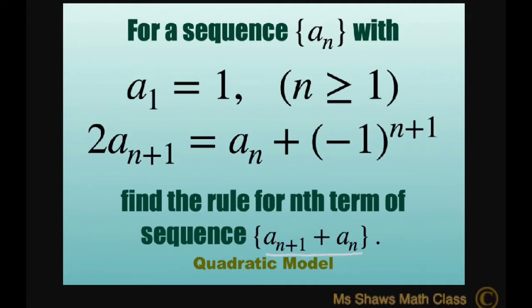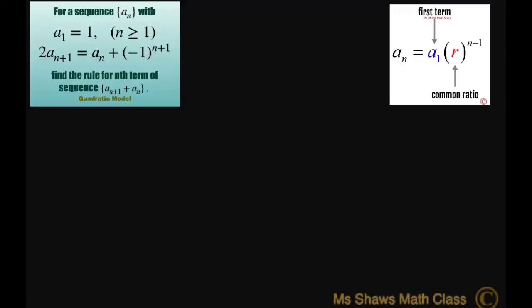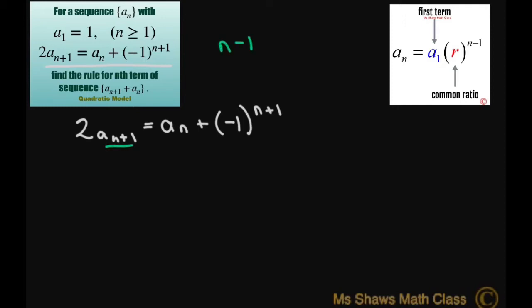Our goal is to get this sequence here, and we're going to do that by manipulating our equation. So let's write out what we have: 2 a sub n plus 1 equals a sub n plus negative 1 to the power of n plus 1. We'll call this equation 1.